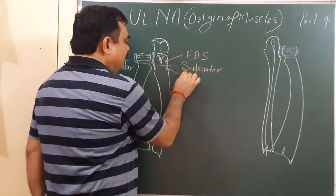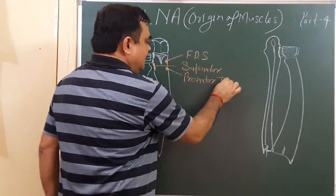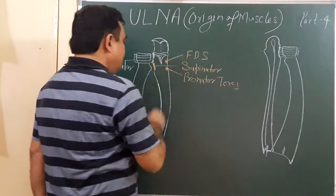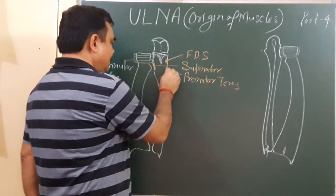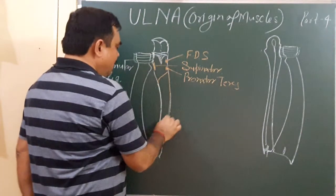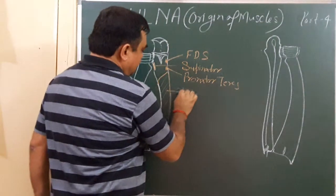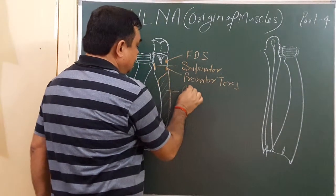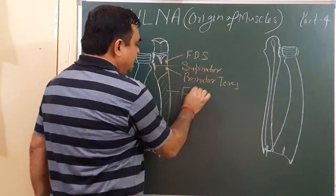This is pronator teres. And the muscle here is pronator quadratus... sorry, this is flexor digitorum superficialis.